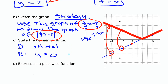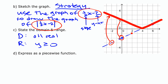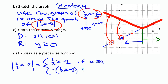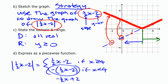To express this as a piecewise function, the absolute value of ½x minus 2 has two pieces. The part that doesn't change is where x is 4 or greater — that part equals ½x minus 2 when x is greater than or equal to 4. On the other side of the x-intercept, it's the opposite of that, so we put a negative outside: negative(½x minus 2) when x is less than 4. You could also distribute the minus sign and write it as negative ½x plus 2.